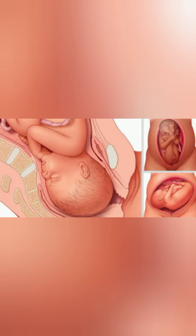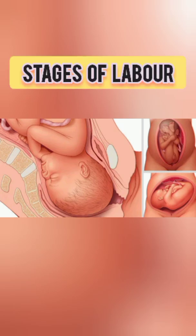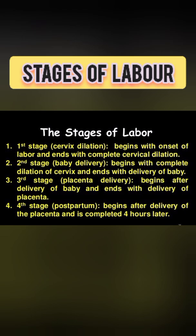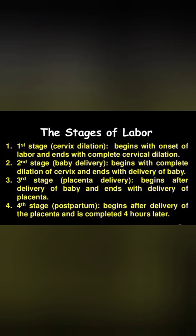There are four stages of labor. The first stage starts from the onset of true labor pain and ends with full dilatation of the cervix — it is called the cervical stage. The second stage starts from full dilatation of the cervix and ends with the expulsion of the fetus from the birth canal.